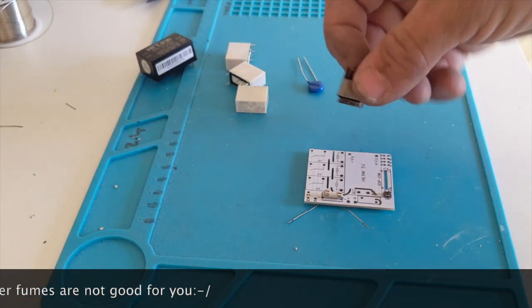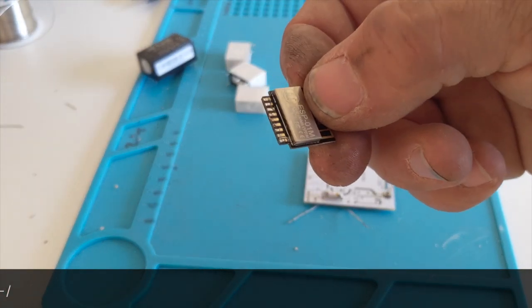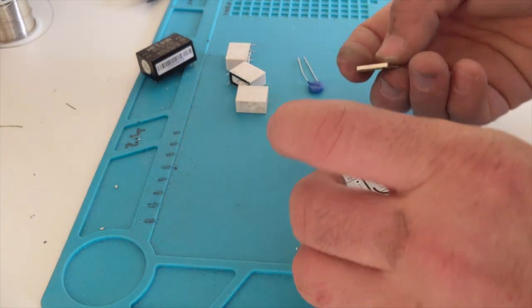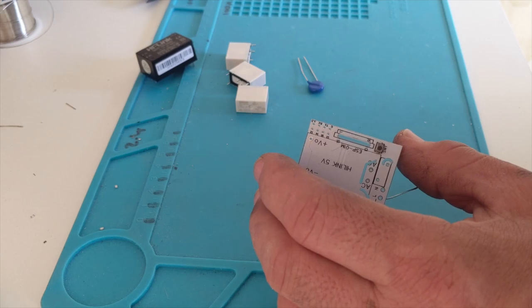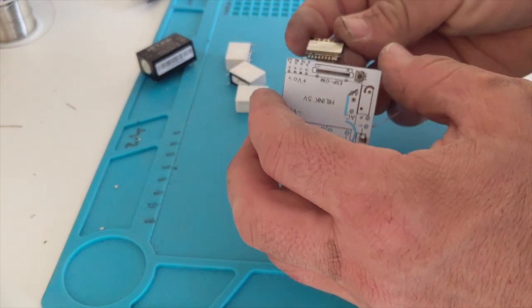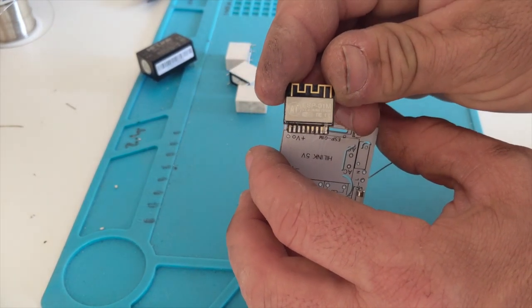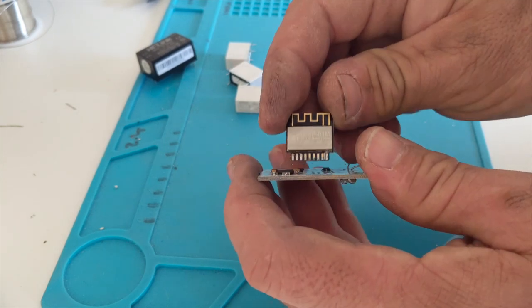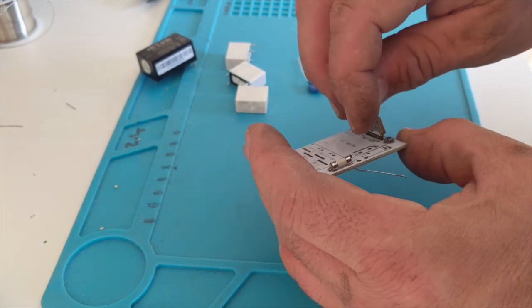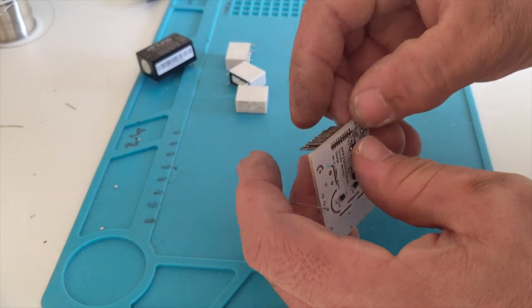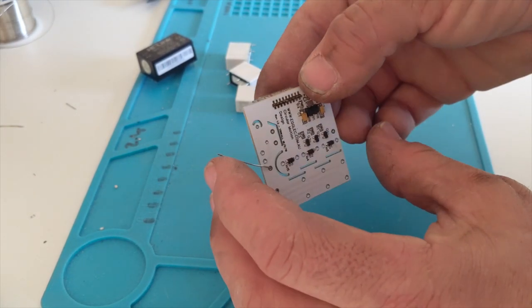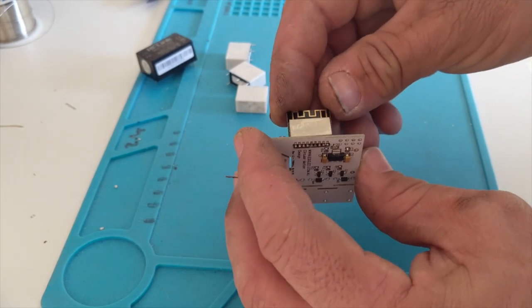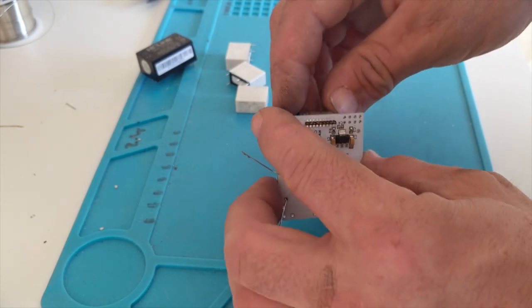So to start off with we're going to attach the Wi-Fi module, the ESP module. Now this is an ESP8582 and that one has flash memory built into it so it doesn't have a separate memory chip. Which means it's only got one megabyte of memory which doesn't give much space for extra programming but it's enough, there's enough to fit ESP home on it.